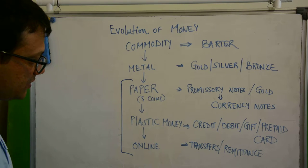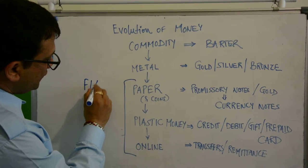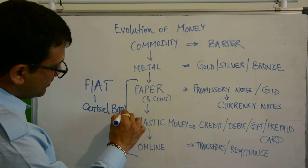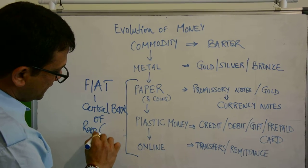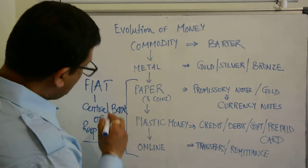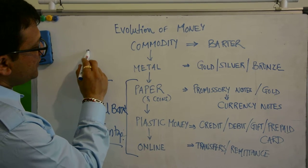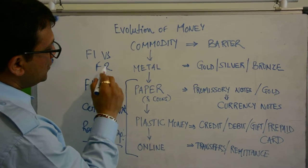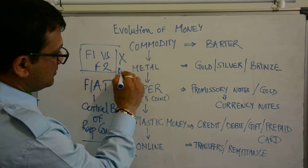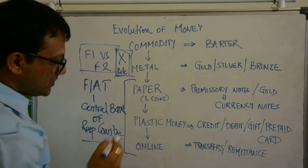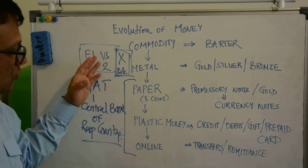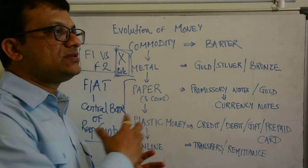All of this — from paper money to plastic to online — is done in fiat currency, which is the currency issued by the central bank of the respective country. In terms of international trade, it will be a transaction between two different currencies — say fiat one versus fiat two — and there would be an exchange rate between them. So money has evolved from commodities to online fiat currencies, which can be one, two, or multiple currencies exchanged across transactions.